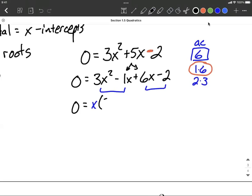If we factor out an x, we're going to be left with 3x minus 1 inside a set of parentheses.